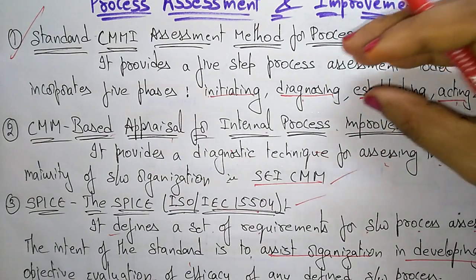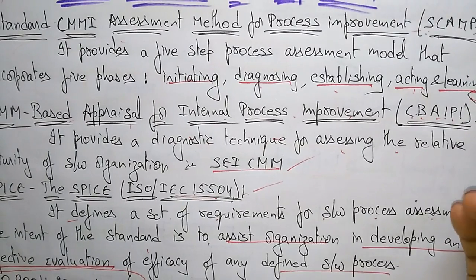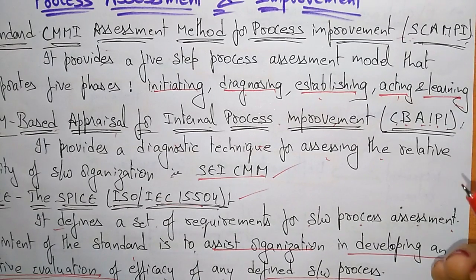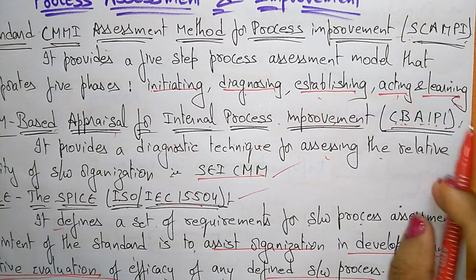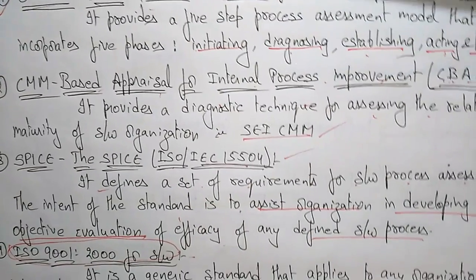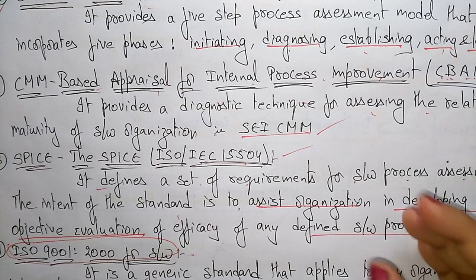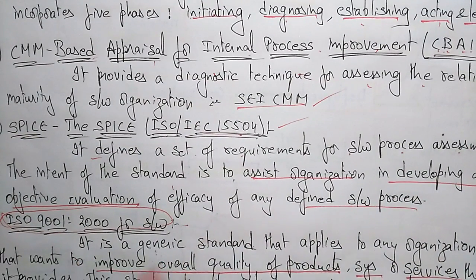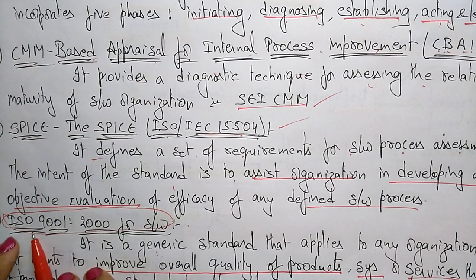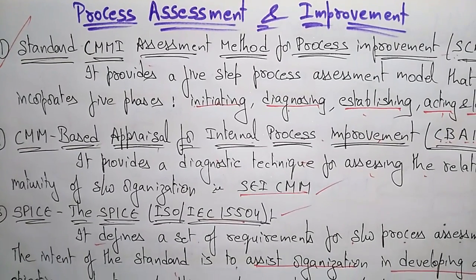In summary: if a product or process follows the five phases — Initiating, Diagnosing, Establishing, Acting, and Learning — it will be given the SCAMPI standard. If it follows the diagnostic technique for assessing relative maturity, it will be given CBA IPI for internal process improvement. If the software provides an objective evaluation, it will be given the SPICE standard. And based on the improvement of overall product quality, the ISO 9001:2000 standard is given. This concludes process assessment and improvement.